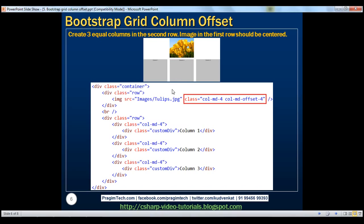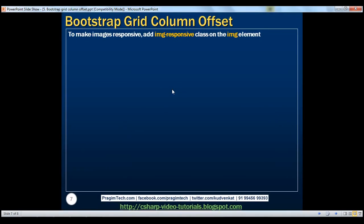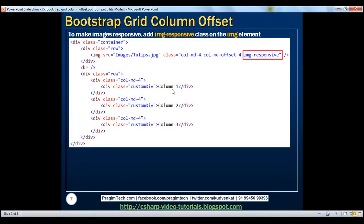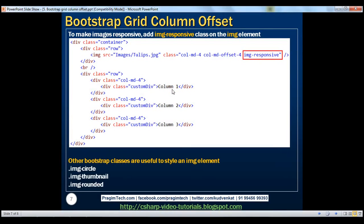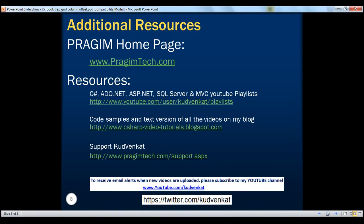To summarize: to make images responsive, we use the img-responsive class on the image element. We also have a few other Bootstrap classes to style images: img-circle, img-thumbnail, and img-rounded. Thank you for listening and have a great day.